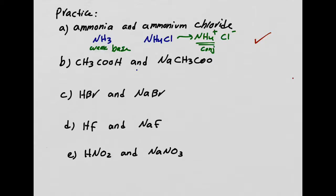CH3COOH is acetic acid. Is that a weak acid? It sure is — so the first requirement is met. Is NaCH3COO the conjugate of acetic acid? The conjugate is formed after losing the hydrogen — this is the conjugate base of acetic acid. Sodium is a spectator ion, a counter ion to counterbalance it. So is this a buffer? Yes — I have a weak acid and its conjugate base. This is a buffer solution.